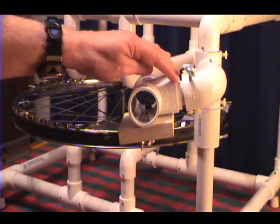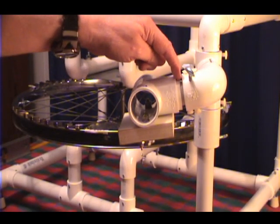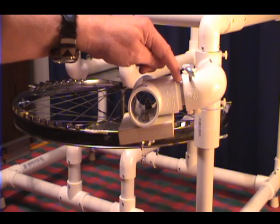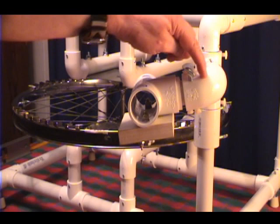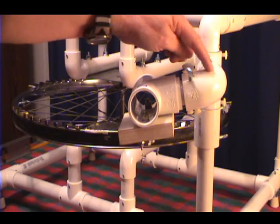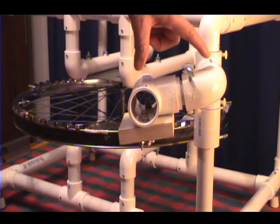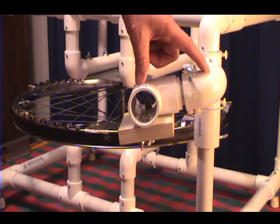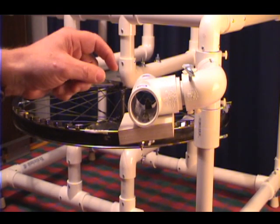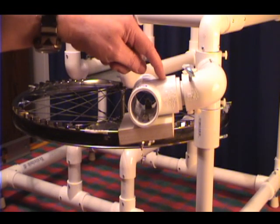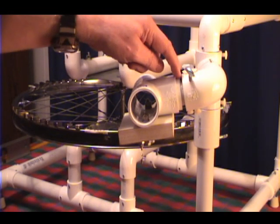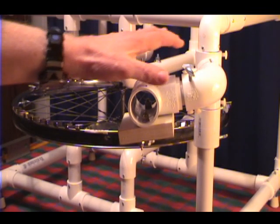It goes into a reducing bushing, and then a pipe which goes into a PVC elbow. These are one and a quarter inch fittings. And the reducing bushing goes from one and a quarter down to a one inch pipe which is inserted in the elbow.